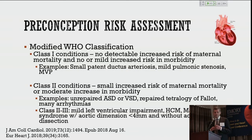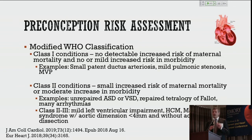The WHO classification system divides patients into four categories. Class I conditions have no detectable increased risk of maternal mortality and no or mild increased morbidity — examples include small patent ductus arteriosus, mild pulmonic stenosis, and mitral valve prolapse. Class II conditions have a small increased risk of maternal mortality — unrepaired ASD or VSD, repaired tetralogy of Fallot, and many arrhythmias. Class II to III includes mild left ventricular impairment, hypertrophic cardiomyopathy, and Marfan syndrome with an aortic root size of less than 40 mm without aortic dissection.